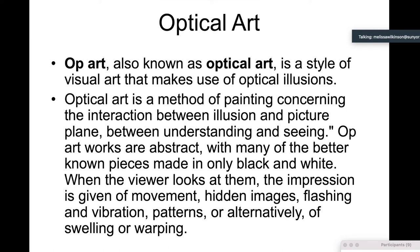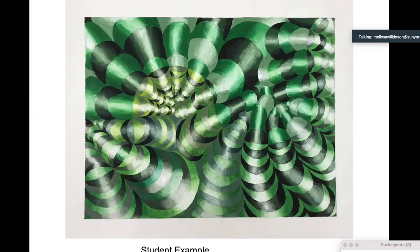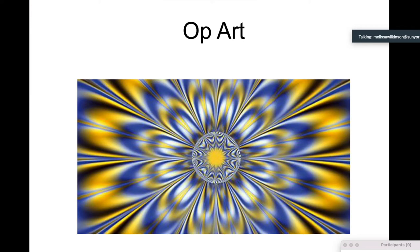Okay, so optical art. It's known as optical art, and it's a style of visual art that makes use of optical illusions. Optical art is a method of painting concerning the interaction between illusion and picture plane, between understanding and seeing. Op art works are abstract, with many of the better known pieces made only in black and white. When the viewer looks at them, the impression is given of movement, hidden images, flashing and vibration, patterns, or alternatively of swelling or warping, such as in that image I opened up with.